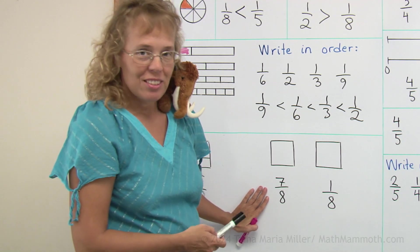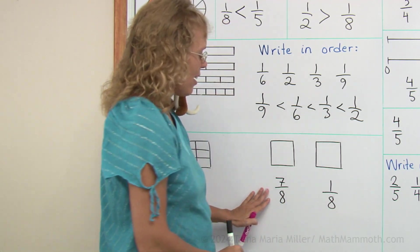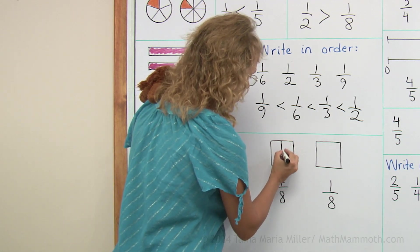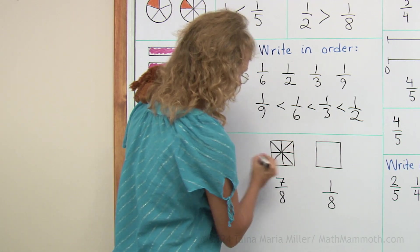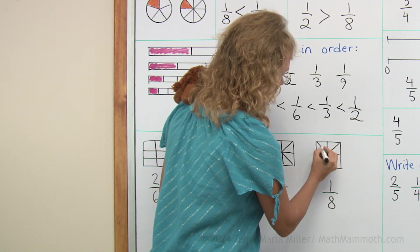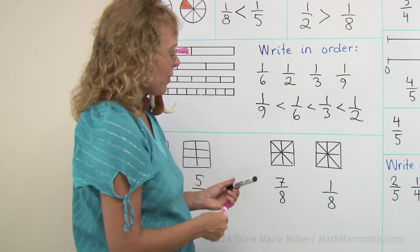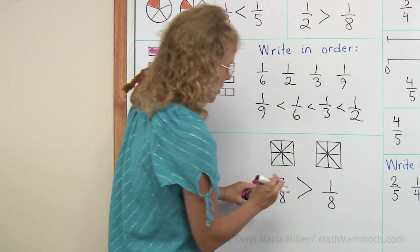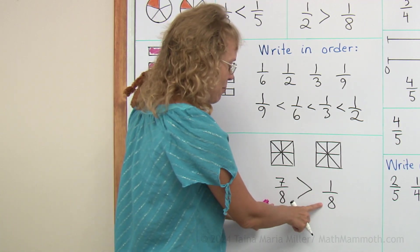Here we have the same situation, seven eighths and one eighth. It's the same kinds of pieces, eighths and eighths. There would be seven eighths from here and one eighth from here. And so seven eighths is more. We have seven pieces and one piece and the same kinds of pieces.